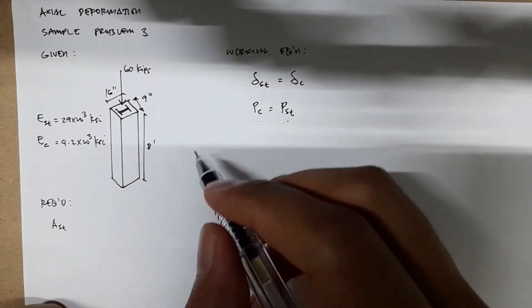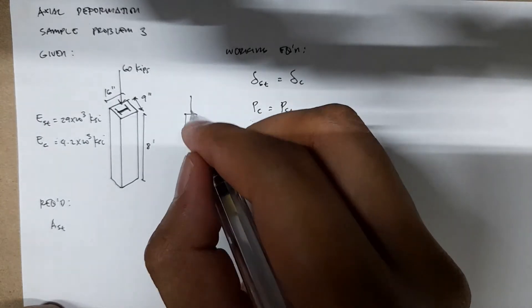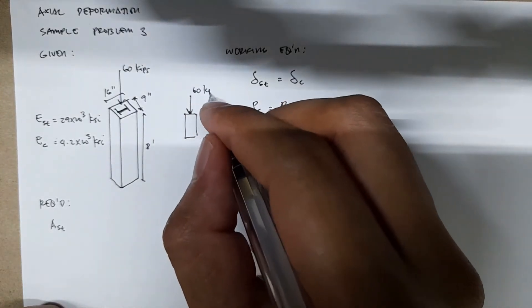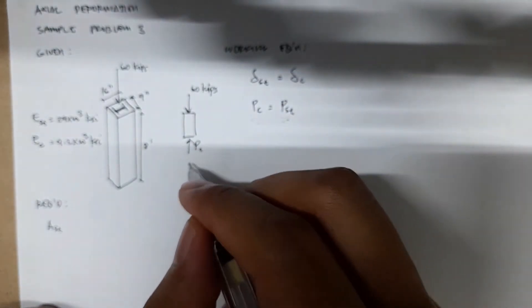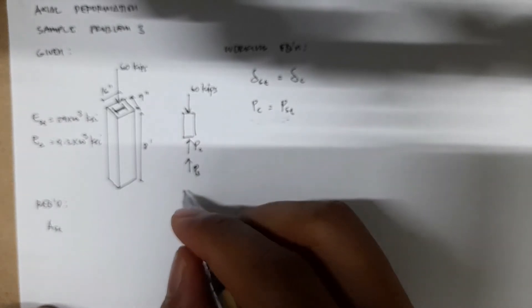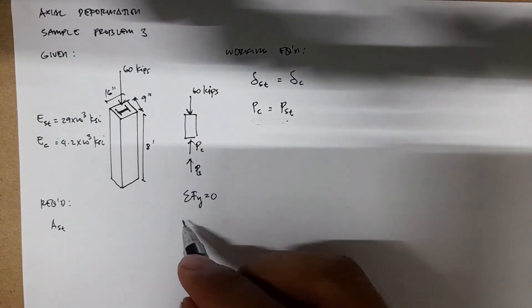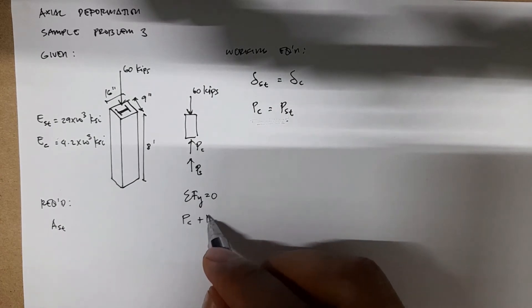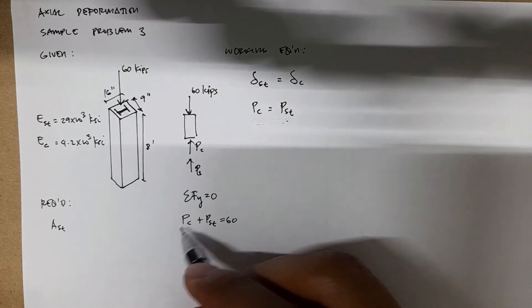For the summation of forces along the y-axis, if we have the FBD, we have the 60 kips with the force of the concrete and the force of steel. Summation of forces along y equals zero: Pc plus Pst equals 60.